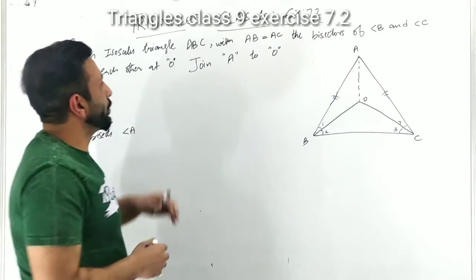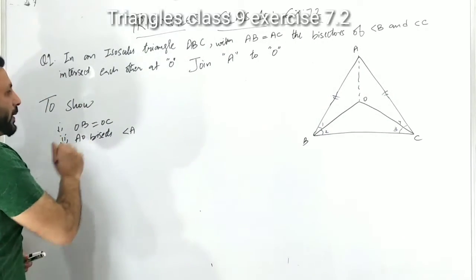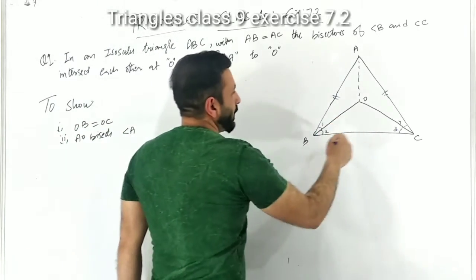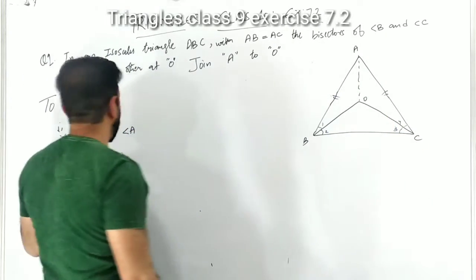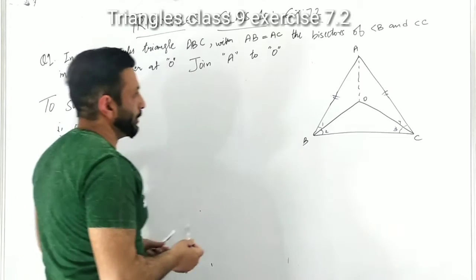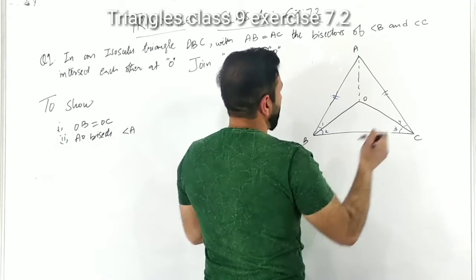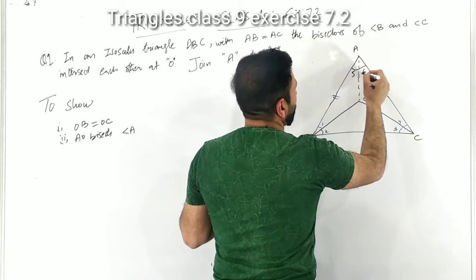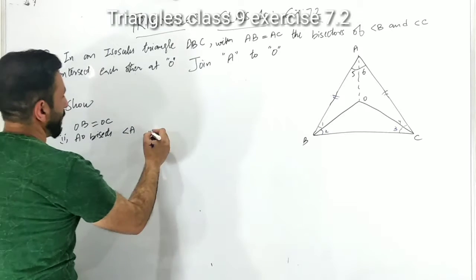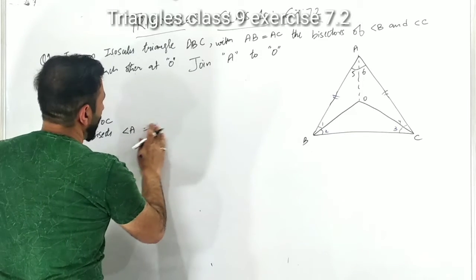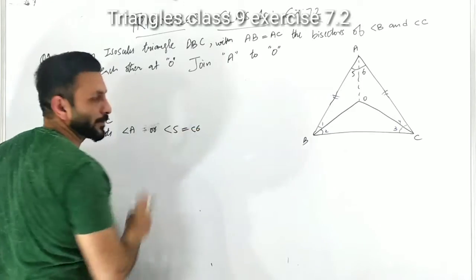Join A to O. After that we need to prove: OB is equal to OC, and AO bisects angle A. In other words, we can say that we have to prove angle 5 is equal to angle 6.